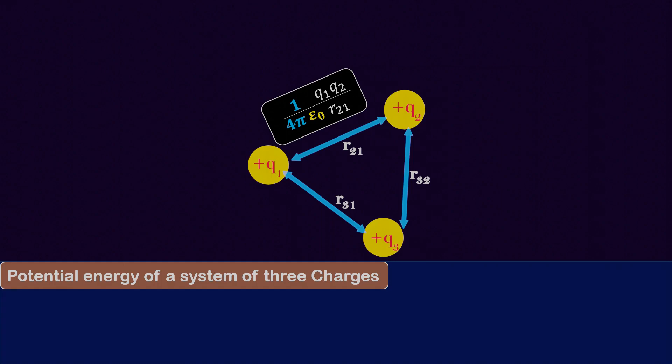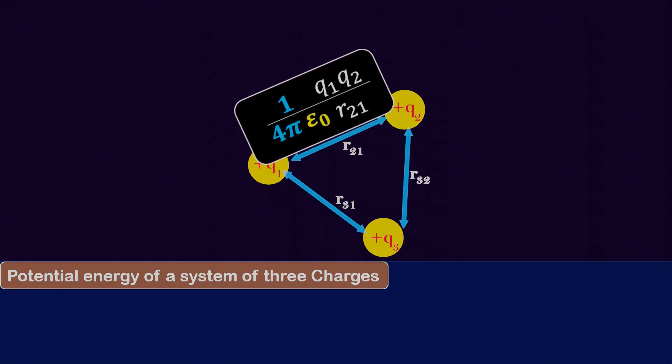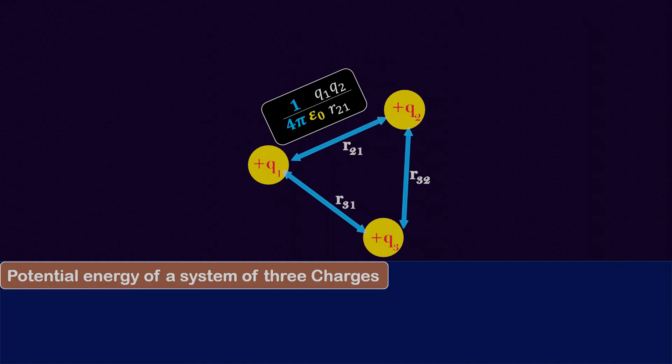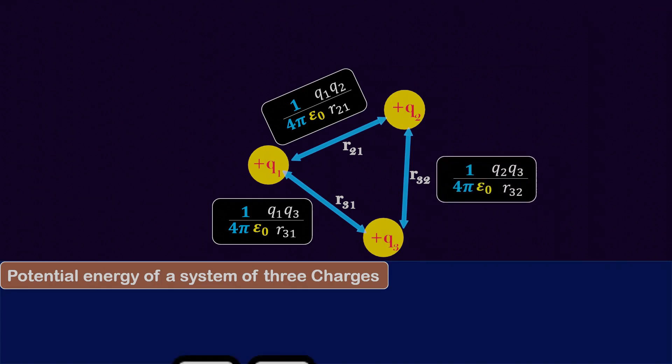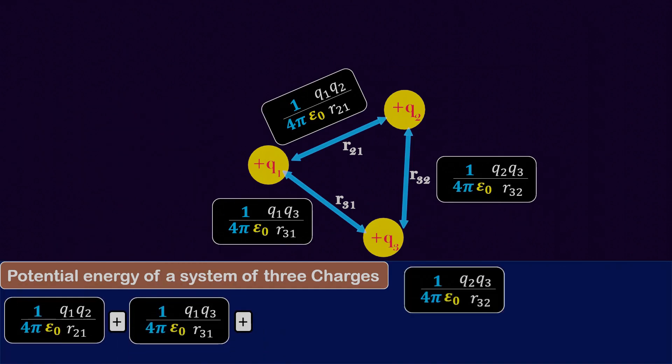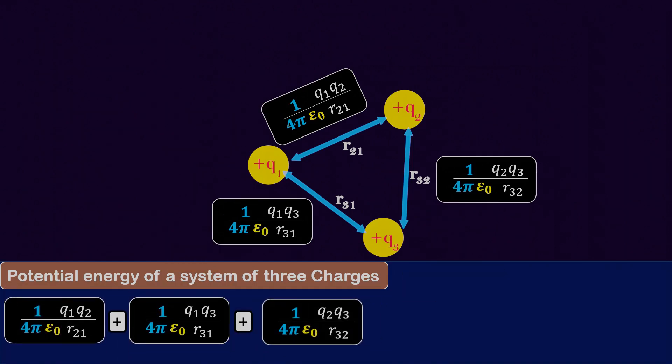As we have seen before, the potential energy between q1 and q2 is 1 upon 4 pi epsilon naught q1 q2 divided by r. Using the same expression with some modification, we can write the potential energy between q1 and q3 as 1 upon 4 pi epsilon naught q1 q3 divided by r. Similarly, you can calculate it for q3 and q2 resulting in a similar expression. Finally by summing up these three energies, we will obtain the total energy of the system of three charges.